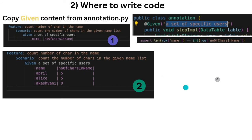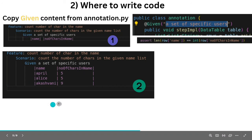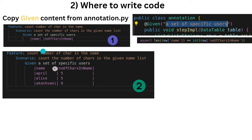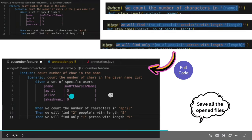For the Given step, copy the scenario text from annotation.py — 'a set of specific users' — and paste it. Don't copy the double quotes, just the content. Then give the three names: two names with five letters and one name with nine letters, following the code shown.